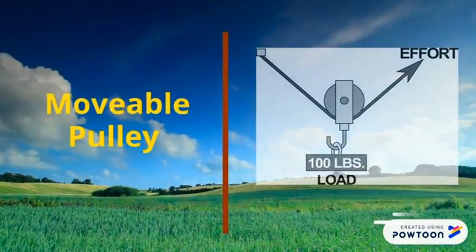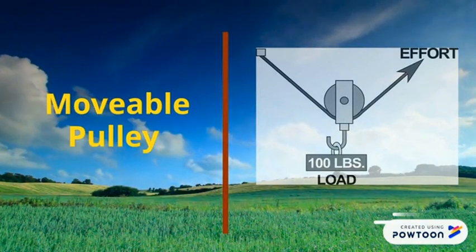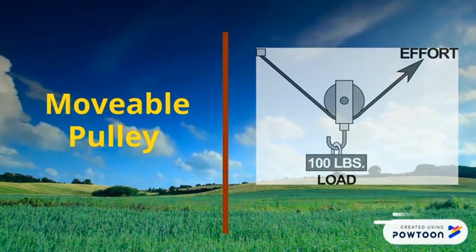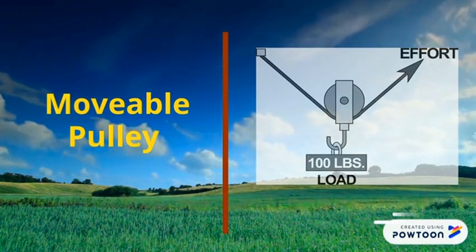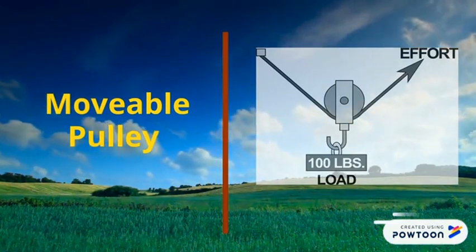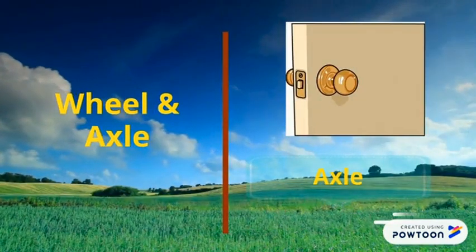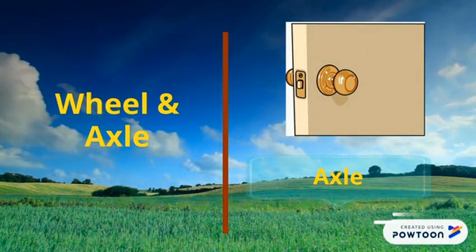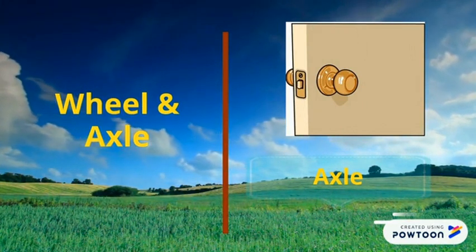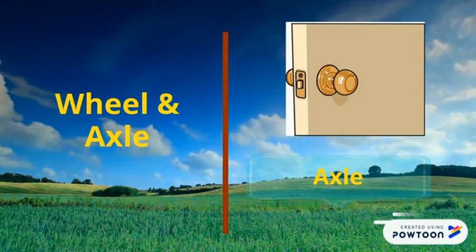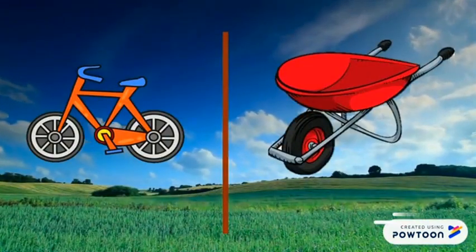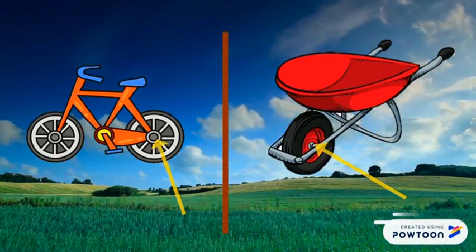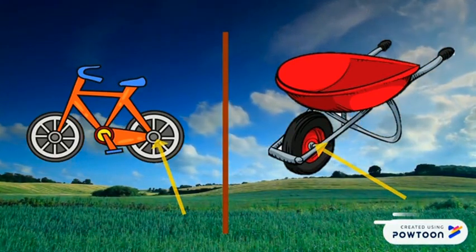Movable pulley: one end of the rope is tied down, the load is hooked to the pulley, and pulling up on the rope makes both the pulley and the load rise. Wheel and axle: a door knob is part of a wheel and axle — the large round knob turns a smaller axle. Two other examples where you can find a wheel and axle are on a bicycle and on a wheelbarrow.